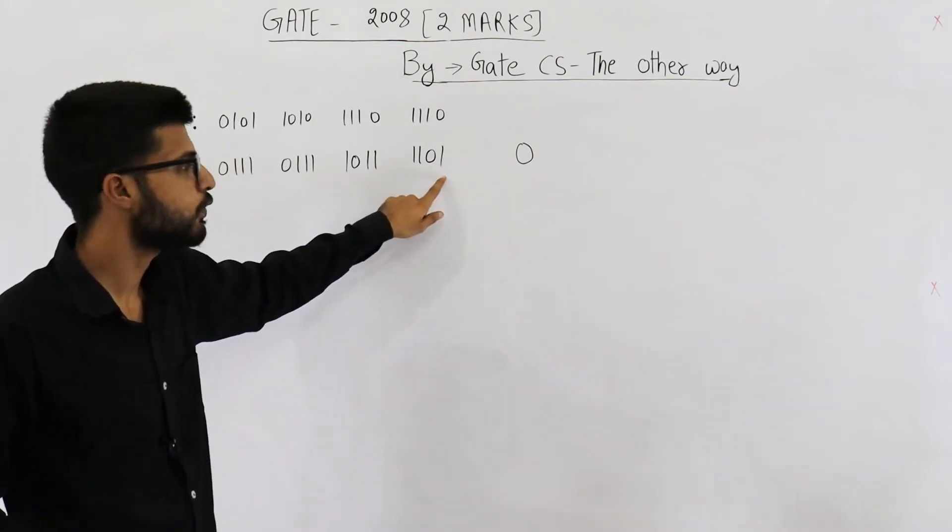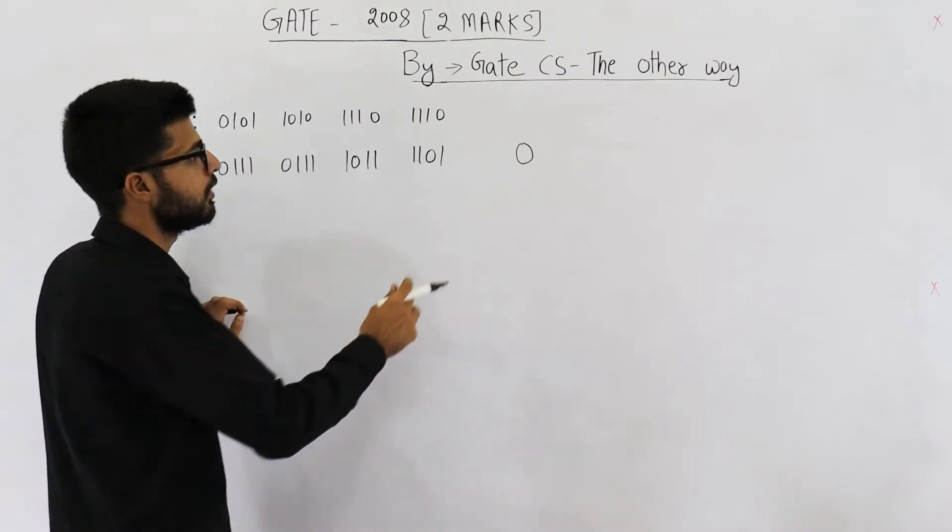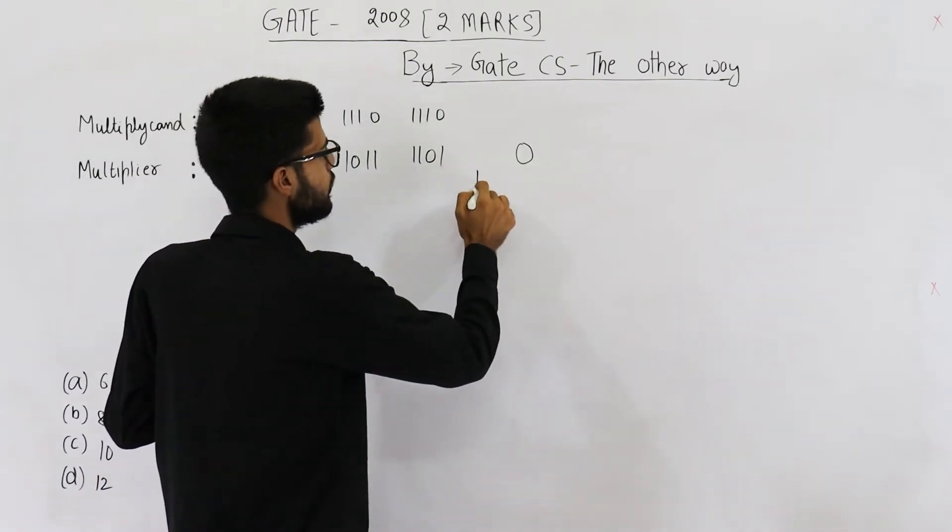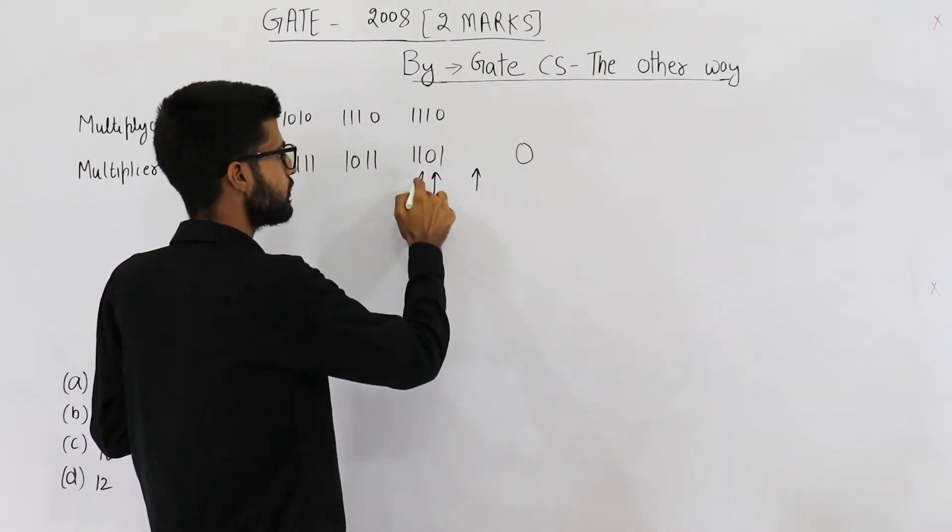If you see a change from one to zero or zero to one, one operation will be done. So from zero to one, there is a change. From one to zero, there is a change. From zero to one, again there is a change.